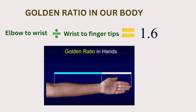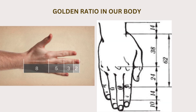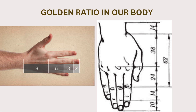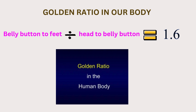The same applies if you measure your elbow to your wrist and divide it by your wrist to your fingertips — you will get the golden ratio, 1.6. If you divide the distance from the bottom of your finger to your wrist by the furthest tip of your finger to the bottom of your finger, we get the golden ratio, 1.6. Also, the distance from your knuckle to fingertips divided by bottom of finger to knuckle gives 1.6. Your belly button to your feet divided by head to belly button is also 1.6 — the golden ratio.